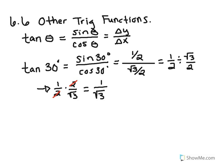Like I told you before, do not ever leave an answer with a radical in the denominator. Let's rationalize it and make it so that the radical is in the numerator instead. So 1 times the square root of 3 is just the square root of 3. And the square root of 3 times itself is just 3.